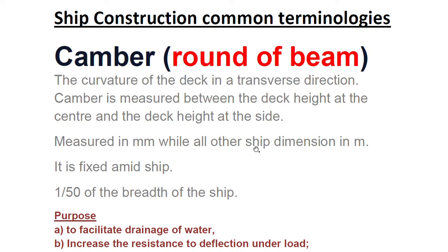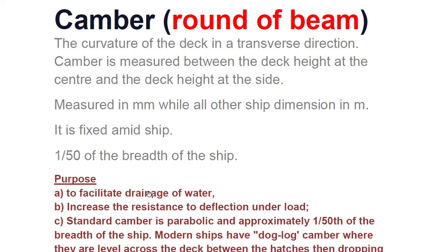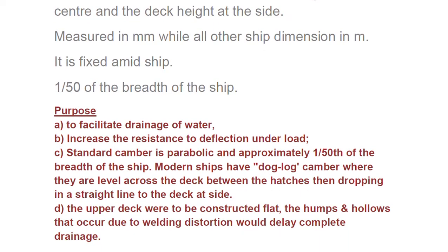Camber, also known as round of beam, is the curvature of the deck in a transverse direction. It is measured between the deck height at the center and the deck height at the side, at the midship position. At midship you have maximum height at the center and minimum at the sides. Camber is measured in millimeters while all other ship dimensions are measured in meters.